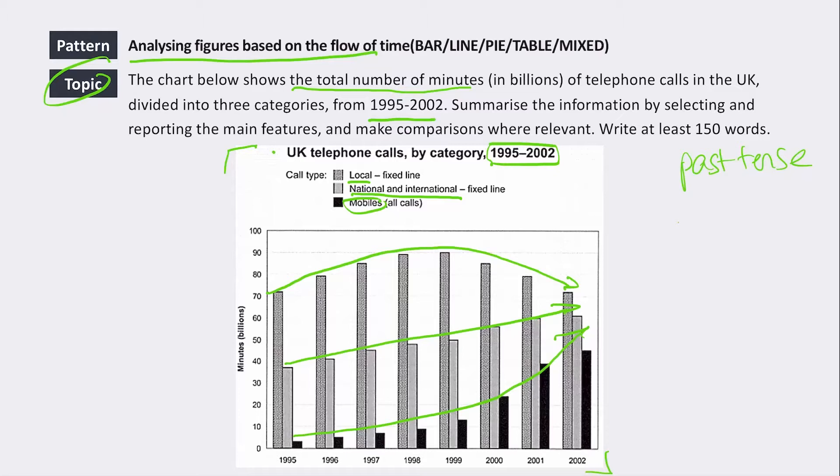So for a Task 1 answer, your first paragraph should be your paraphrase, and then you should have your overview of the trends. So the two main ideas that are shown in this data.